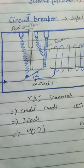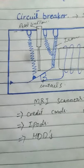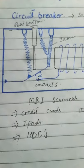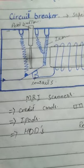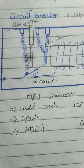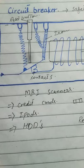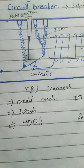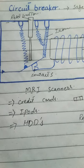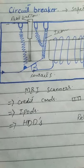Electromagnets are used in our daily lives and also in things such as credit cards, iPods, and HDDs. Thank you.